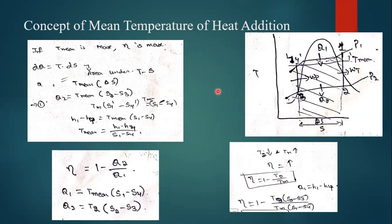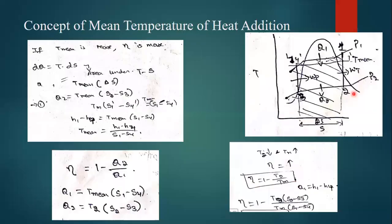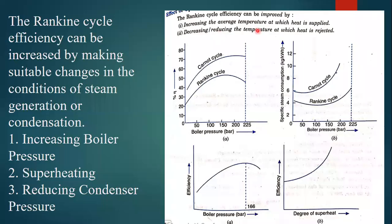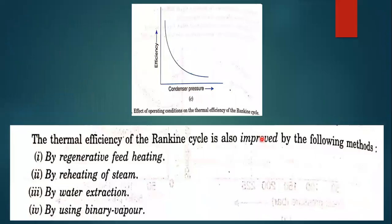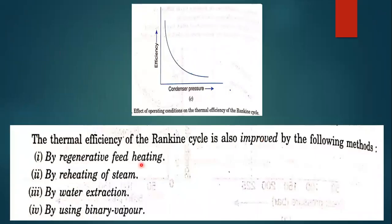This is replica of nothing but these statements, right? Whatever the statements I have said here now, that is the replica of these statements only. That means they are going to prove that these are true. So that's how we are going to increase the efficiency for Rankine cycle. Now I already told these are the things which are going to improve the Rankine cycle efficiency.